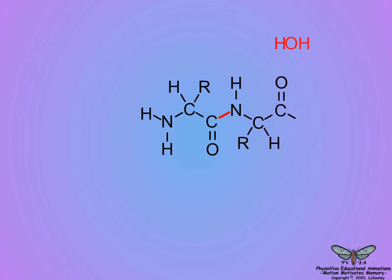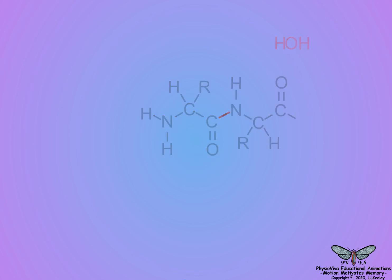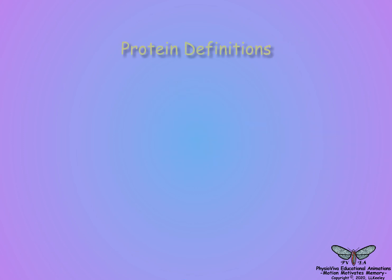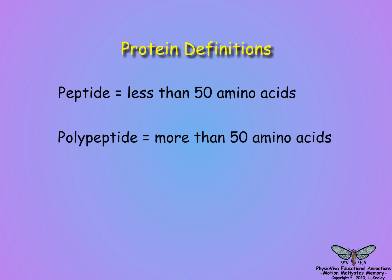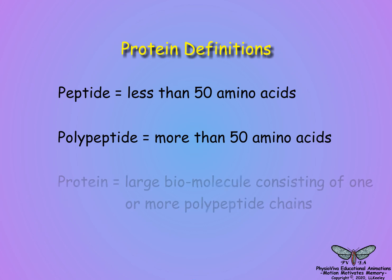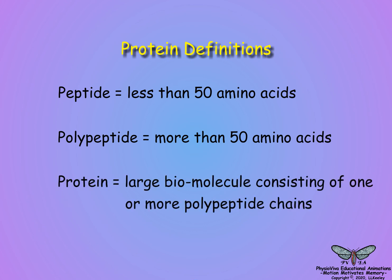In this manner, amino acids form chains of polypeptides and proteins. If the chain is less than 50 amino acids, it is considered a peptide. If it is greater than 50 amino acids, it is a polypeptide, and proteins are comprised of one or more polypeptides.